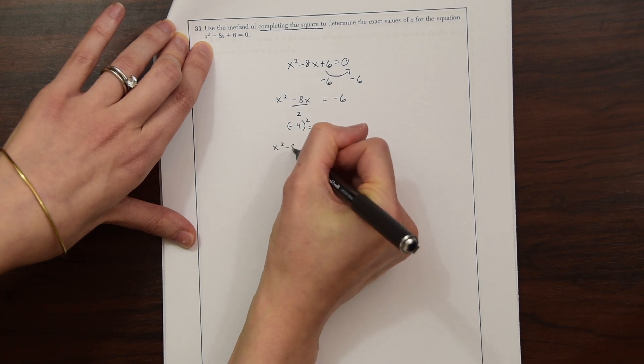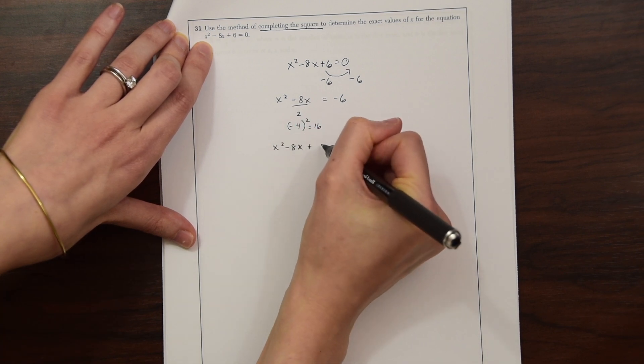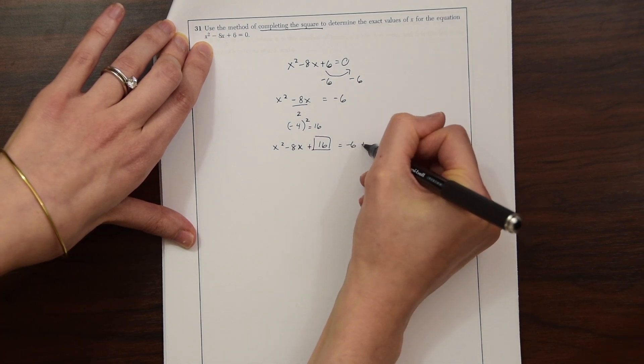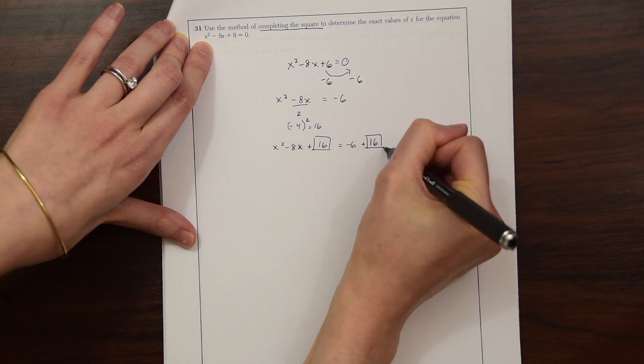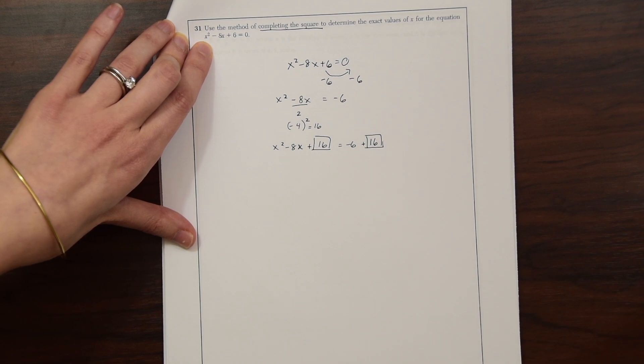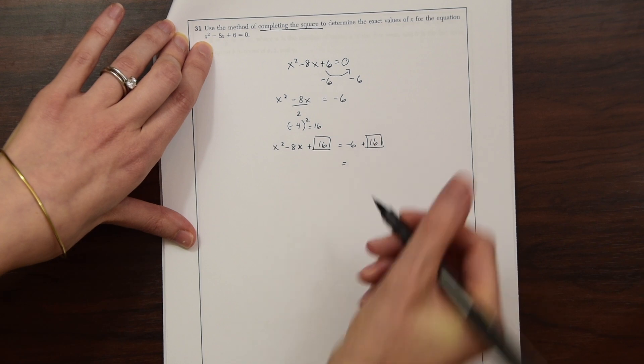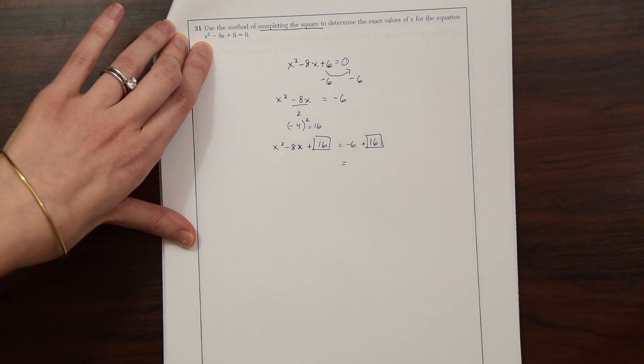So we have x squared minus 8x plus 16. This magic number equals negative 6 plus 16. So now we can add these two together, these two whole numbers together, and we get 10.